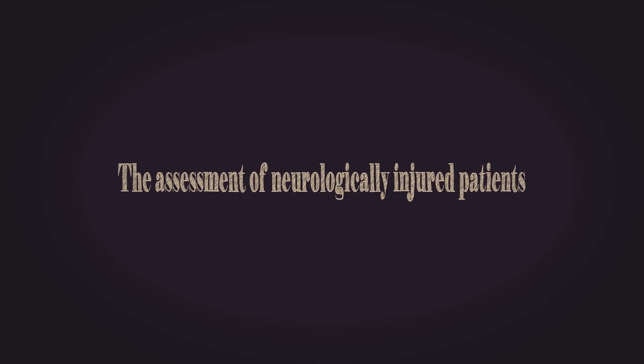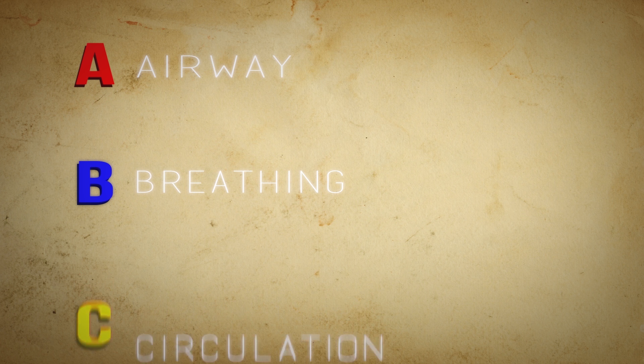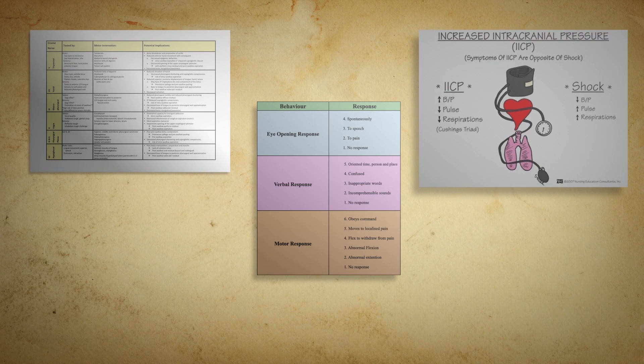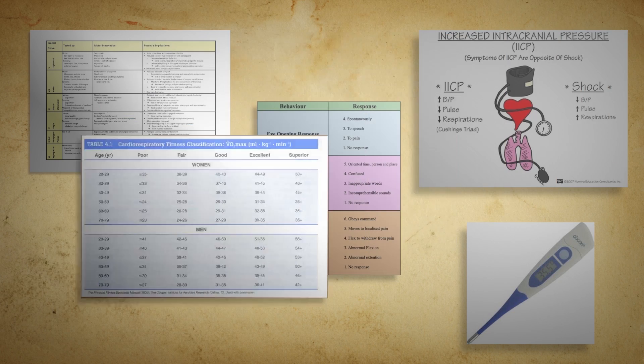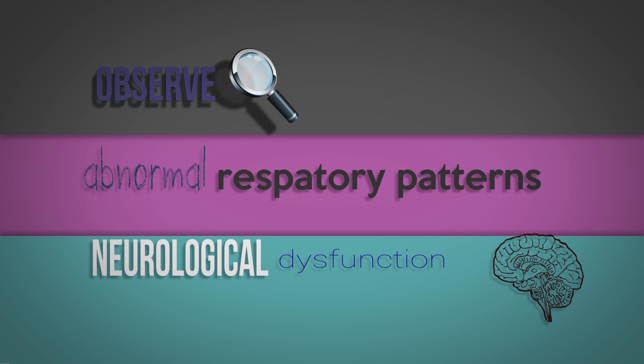The initial assessment of neurologically injured patients begins with the assessment of the ABCs — airway, breathing, and circulation — followed by the Glasgow Coma Scale score, assessment of cranial nerve functions, signs and symptoms of increased intracranial pressure, temperature readings, and cardiorespiratory assessment. Astute observation of any abnormal respiratory patterns is crucial, since this may be the first vital sign indicating neurological dysfunction.